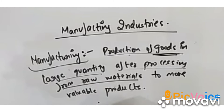So, production of goods in large quantity after processing from raw material to more valuable products. For example, wheat which grows in the farms is not so directly useful, but when it is processed in an industry or factory, it becomes more valuable because flour is made from it, which we use daily. Manufacturing is production of goods in large quantities. Manufacturing industries fall in the secondary sector.